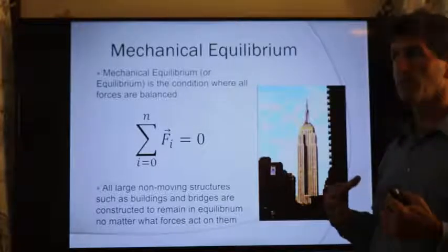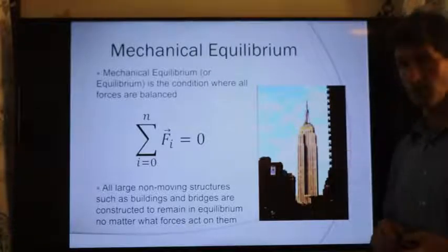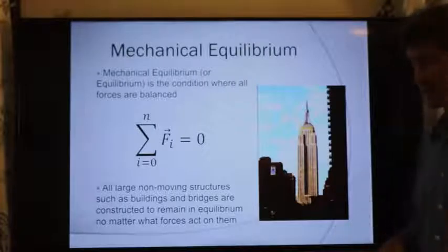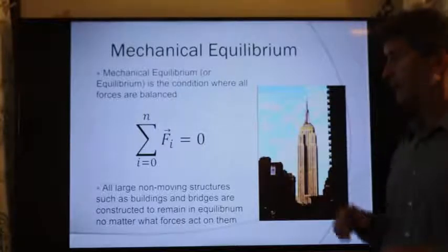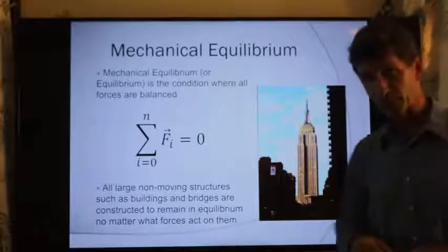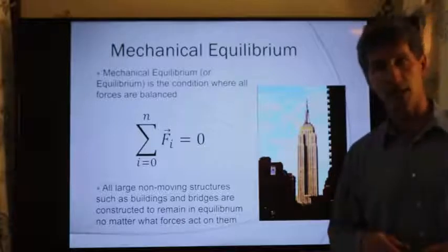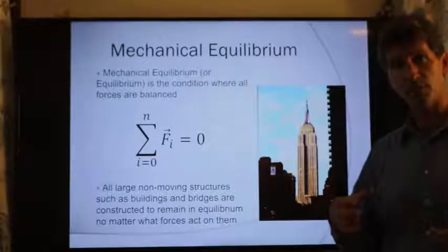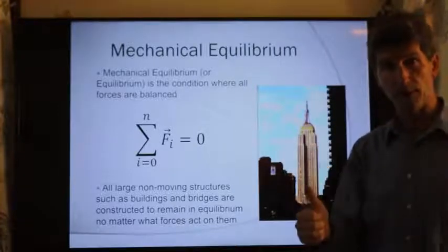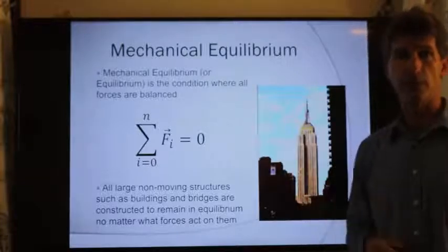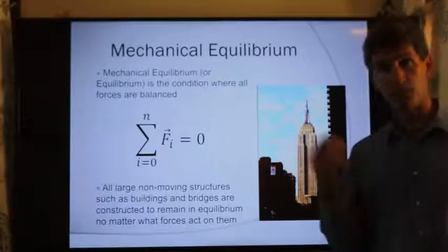We call the condition where an object obeys Newton's first law mechanical equilibrium. Equilibrium means everything's balanced. In this particular case, every single force that acts on an object will be equal to zero. A building — for instance, here's the Empire State Building — most of the force that acts on it is its weight. So for a civil engineer designing a building, most of their concern is to create massive supports that, as gravity pulls down, the supports are able to produce enough upward force to prevent the building from falling. The first thing you're concerned about is your largest force, the force due to gravity.